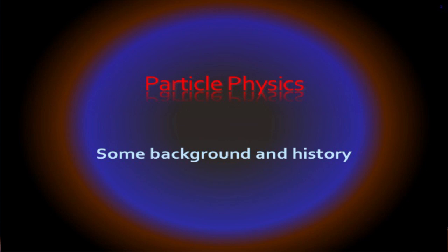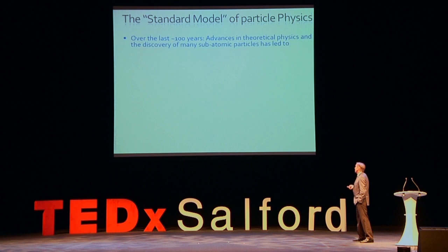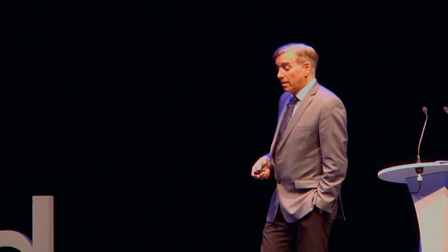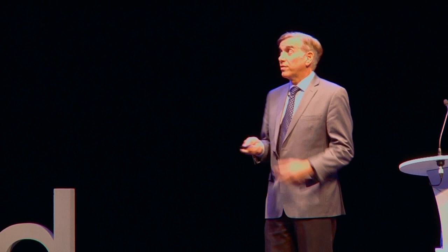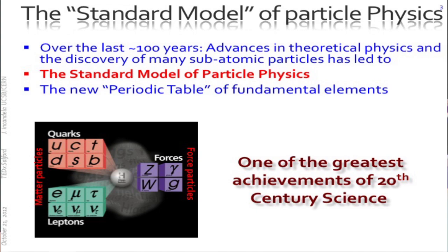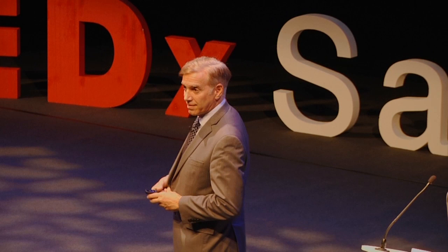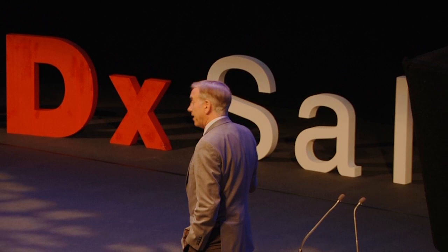Let me give you some background. We have something we call the Standard Model of Particle Physics, and this took about 100 years to put together. Lots of theoretical physics had to be developed. Many subatomic particles had to be discovered, and it is really something like a new periodic table of the most elementary particles that we've built. There was a famous Nobel Prize winner who flashed this slide and said, after decades of research and billions of dollars, this is all we know. But in a sense, this is good. This is what we want.